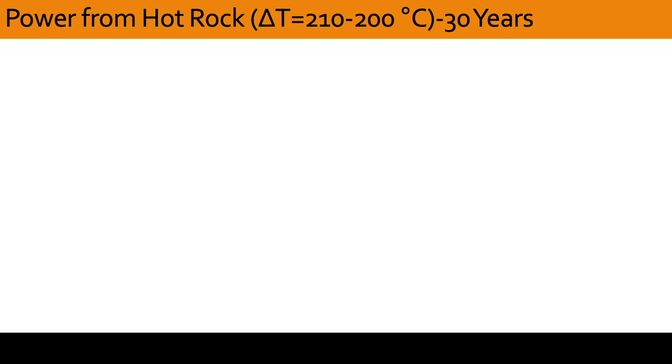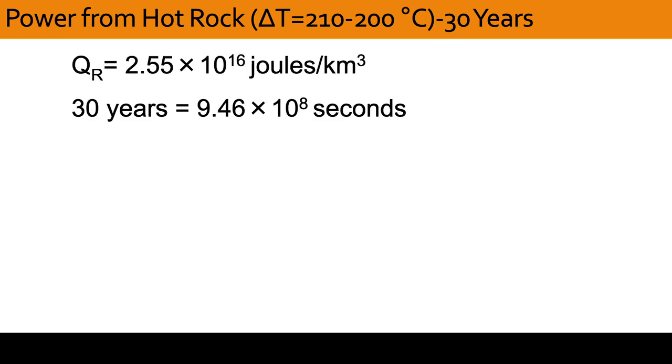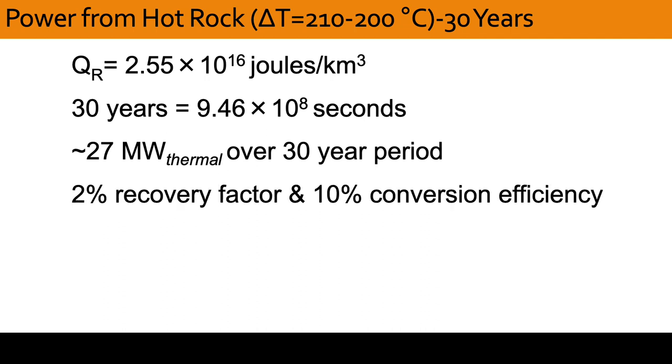We can now consider how this relates to electricity generation over a 30-year period, which represents the commercial life of a power plant. So, multiplying QR by 30 years gives a power production of 27 megawatts thermal. From experience, we know that only a fraction of this thermal energy will be recoverable. There has been some debate as to how much is practical, and for our purposes, we will be conservative and designate a recovery factor of just 2%. We also need to convert from thermal to electrical power, which has an efficiency of about 10%. From this, an electrical output of 0.05 megawatts is calculated.